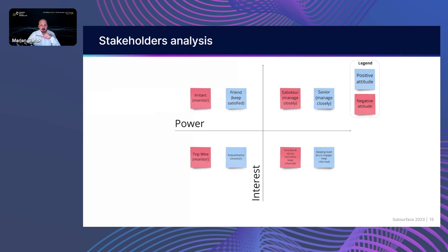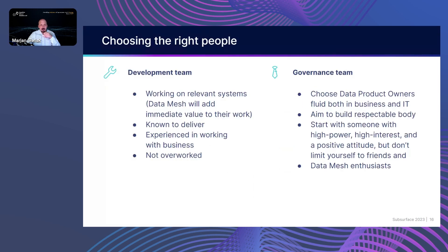Remember during your stakeholder analysis, you are thinking about who can help you evaluate the system. Then you need to choose the right people. When it comes to choosing the development team, as with any other project, you want people who are known to deliver and who are working on the systems you decided will be good for your domain. They need to be experienced in working with business — you don't want your IT and data people to be purely technical during your MVP. They should be fluent in business. On the other hand, your governance team and business people should understand the value of this MVP, have skin in the game, and help you evaluate it.